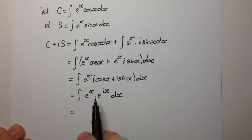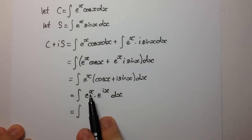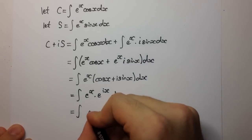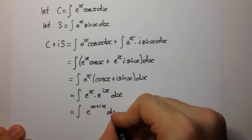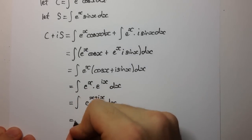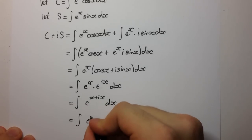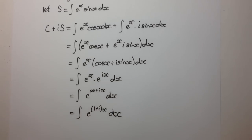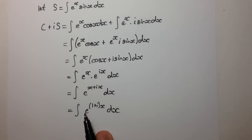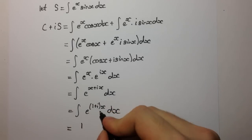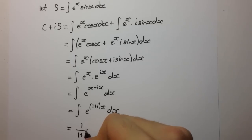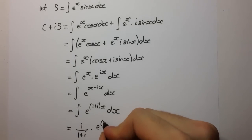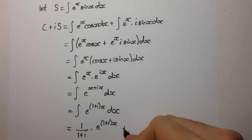Using our index laws, we can combine these two. When we have a product, our indices are added, so we get the integral of e to the (x plus i·x) dx. We can factor out an x and we get the integral of e to the (1 plus i) times x dx. This is in the standard form of e to the power of some constant times x.